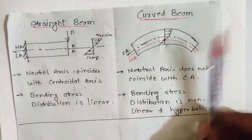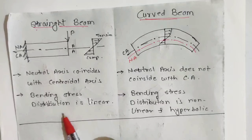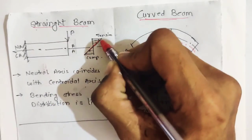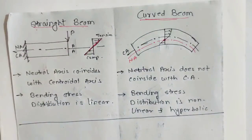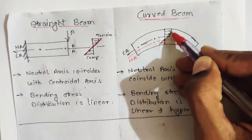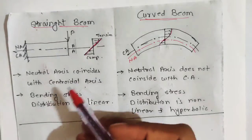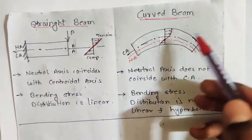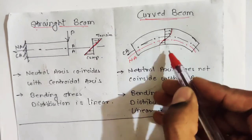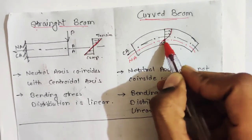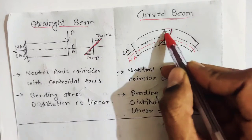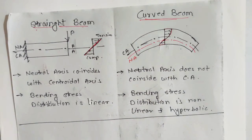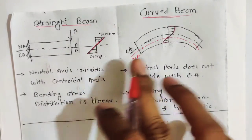The second point is about bending stress distribution: in a straight beam the bending stress distribution is linear, whereas in a curved beam it is non-linear. The third difference is that in a straight beam, tension and compression have the same magnitude — if tension is 100 then compression is also 100. But in a curved beam they are not equal; since the neutral axis does not coincide with the centroidal axis, the compression value is less than the tension value.